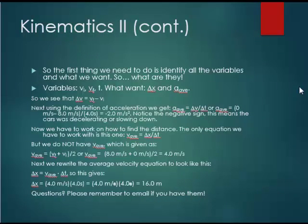The first thing we need to do is identify all the variables and find out what we want. So what are they? Well, the variables are initial velocity, final velocity, and time. And we want the change in position and the average acceleration. So we see that the change in velocity is given as final minus initial. Using the definition of acceleration, we get a_avg = ΔV/ΔT, or a_avg = (0 m/s - 8 m/s) / 4s. Remember, the problem never explicitly said the final velocity was 0 meters per second, but it did state the car stopped. So our answer is negative 2 meters per second squared. Notice the negative sign. This means the car was decelerating or slowing down. A positive or negative sign for an acceleration physically means something.